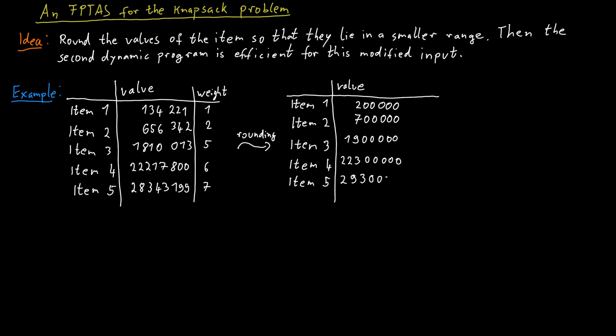How does that help? I've made the values even bigger than they were before. But you notice that all the values are now multiples of 100,000. So we really don't need to write down the full value. We just need to write down what multiple of 100,000 they are. So the first item really only needs to record a value of two, and remember that actually it's two times 100,000. And the second item, we really only need to write down a value of seven.